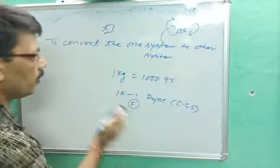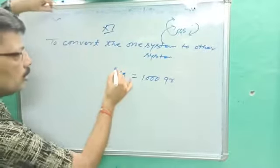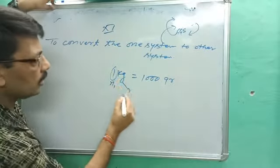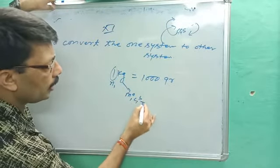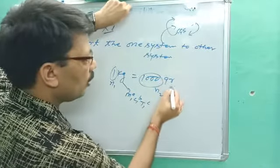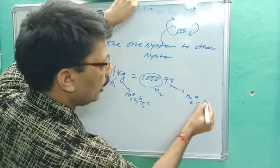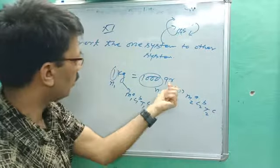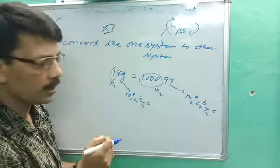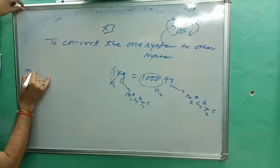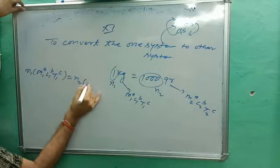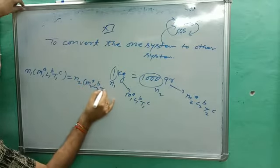For this conversion, we use the formula: the numerical value n1 multiplied by M1^a · L1^b · T1^c is equal to n2 multiplied by M2^a · L2^b · T2^c. Here n1 is the numerical value in the given system and n2 is the numerical value in the system we want to convert to. The exponents a, b, c depend on the physical quantity.